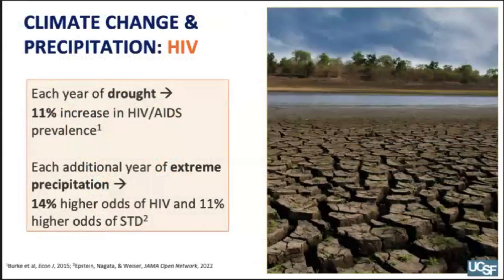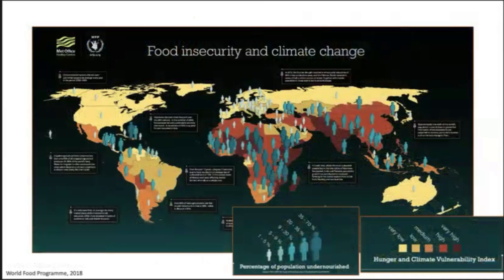Here's an example of how too little water could negatively impact HIV-AIDS. A number of studies consistently show an association between drought conditions and HIV prevalence. One study using data from about 19 countries in sub-Saharan Africa found that each year of experiencing drought was associated with an 11% increase in HIV-AIDS prevalence. In our research, each year of experiencing extreme precipitation in a dataset of 23 countries in sub-Saharan Africa was associated with 14% higher odds of having HIV and an 11% higher odds of having another sexually transmitted disease.